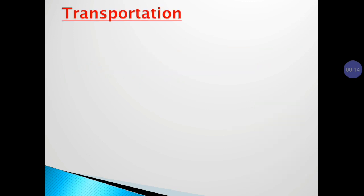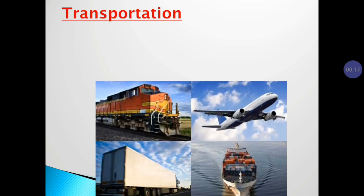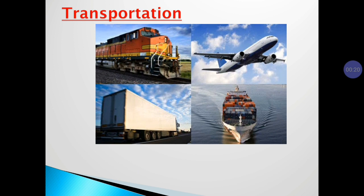What is transportation? Transport or transportation is the movement of humans, animals and goods from one location to another. Modes of transport include air, land involving rail and road transport, water transport, cable, pipeline and space.